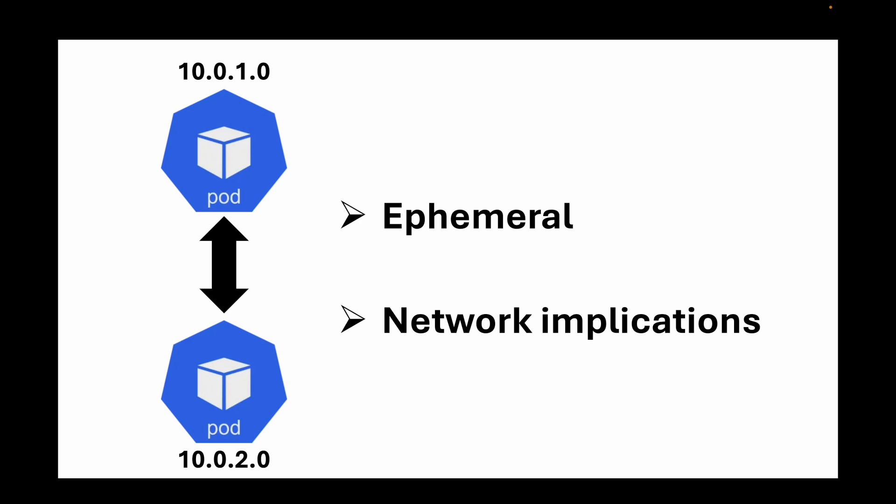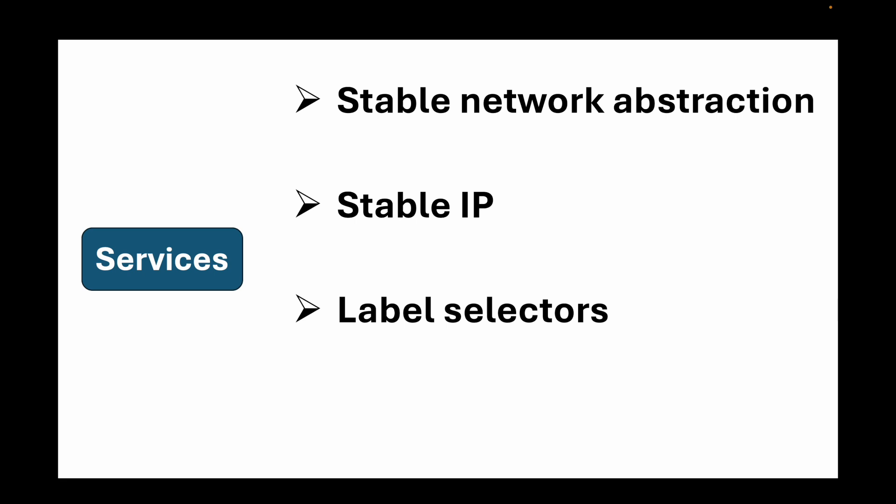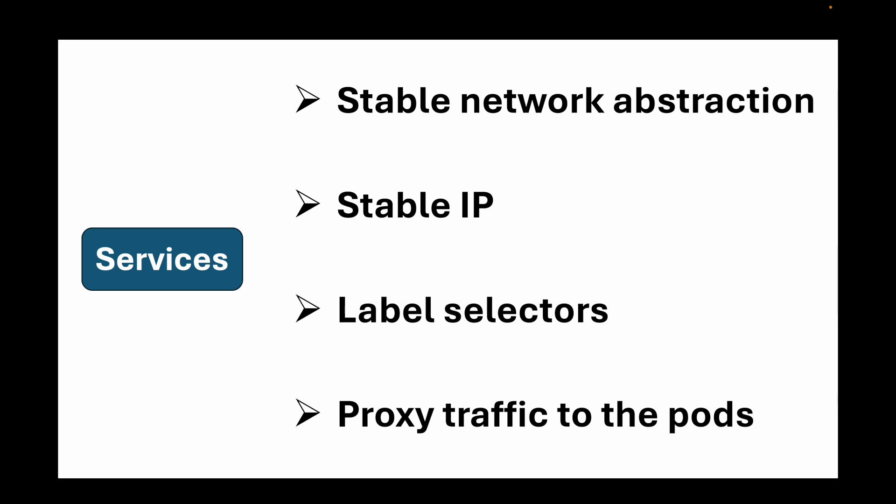To resolve this issue we have services. Services provide a stable network abstraction layer in front of your pods with a stable IP address. Instead of hitting the pods directly, we hit the services which have a stable IP address. Services are associated with a specific workload using label selectors and they proxy your traffic to the pods they are attached to.